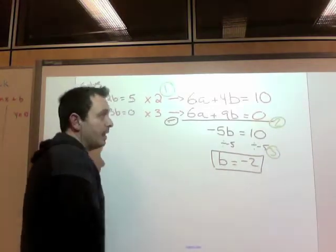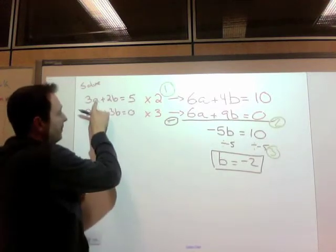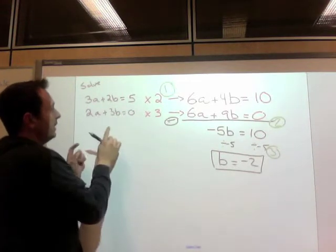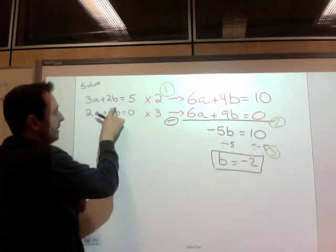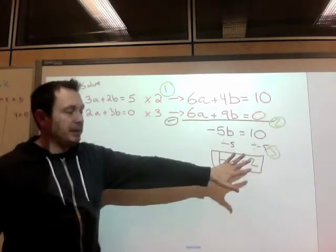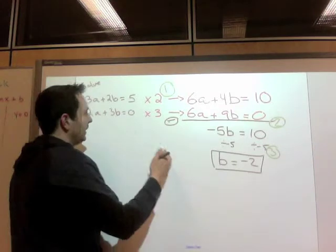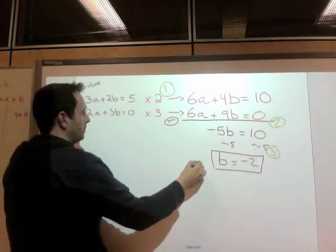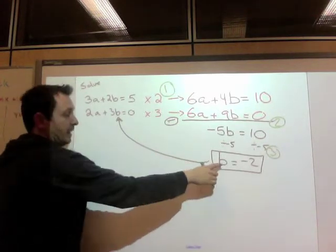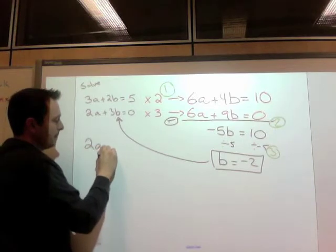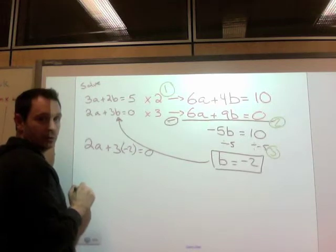But remember, if you go back to graphing, solving is where the two lines meet. Or solving is finding what value of a and what value of b do we need to put into this to make it equal 5. And at the same time, make this a and b equal 0. So I know that b needs to be negative 2. The final step is put our value of b into either equation. I'm going to put the b into this equation just because it's easier. So if the negative 2 replaces this b, I get 2a. The b is becoming negative 2.